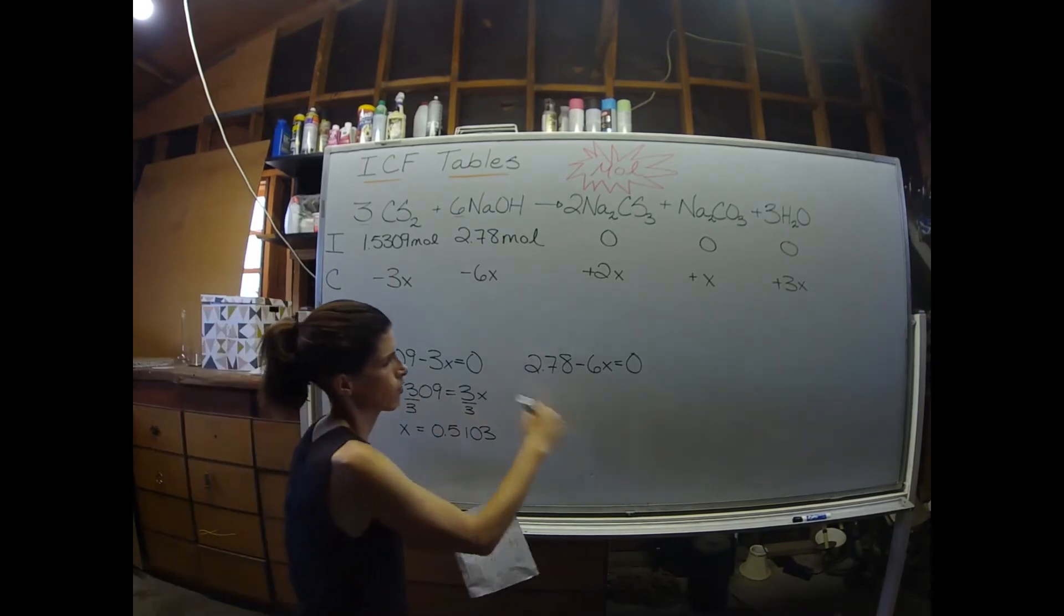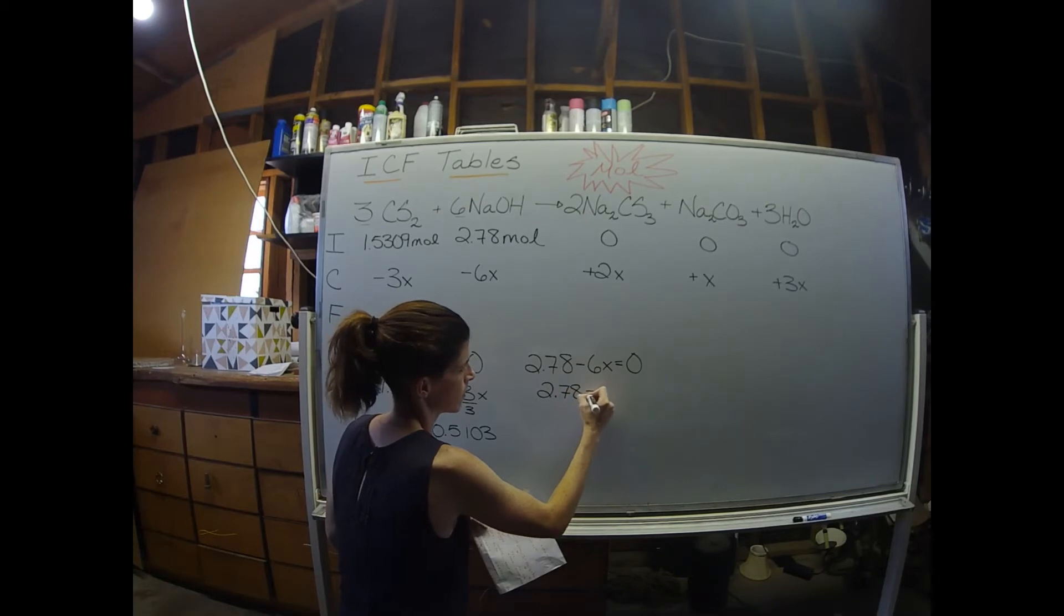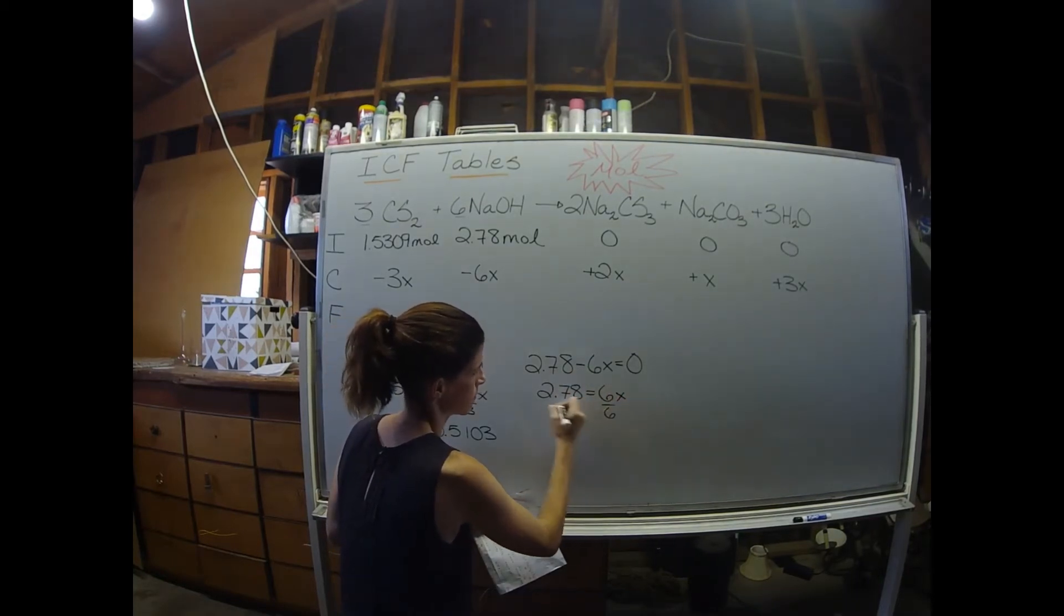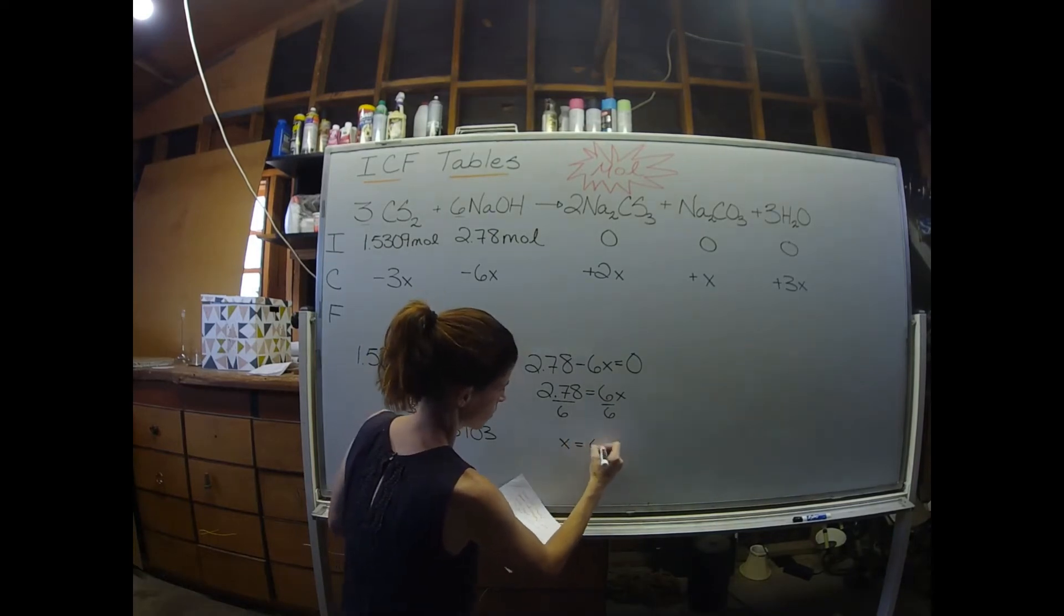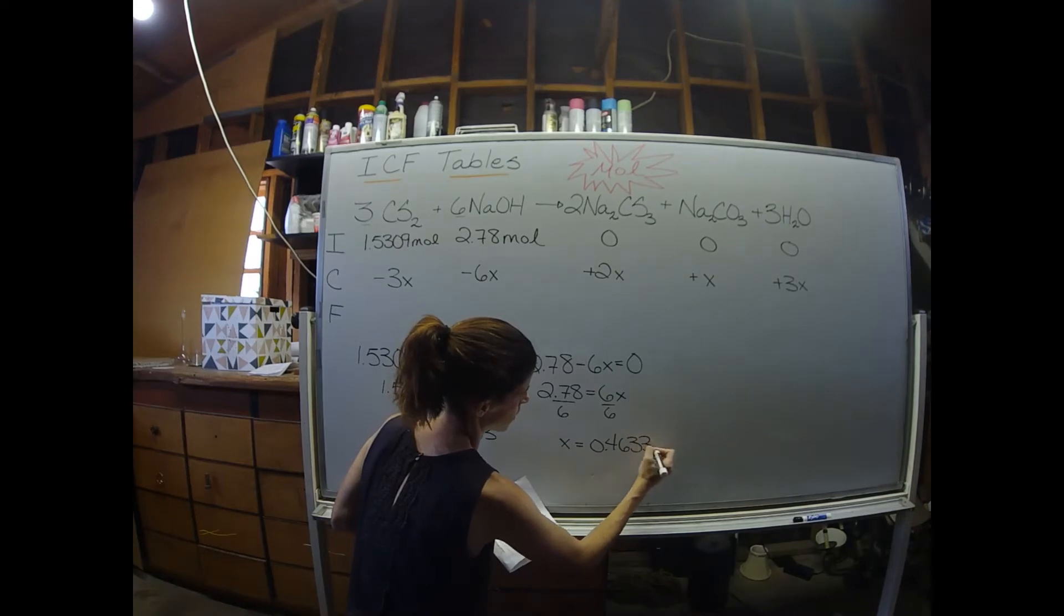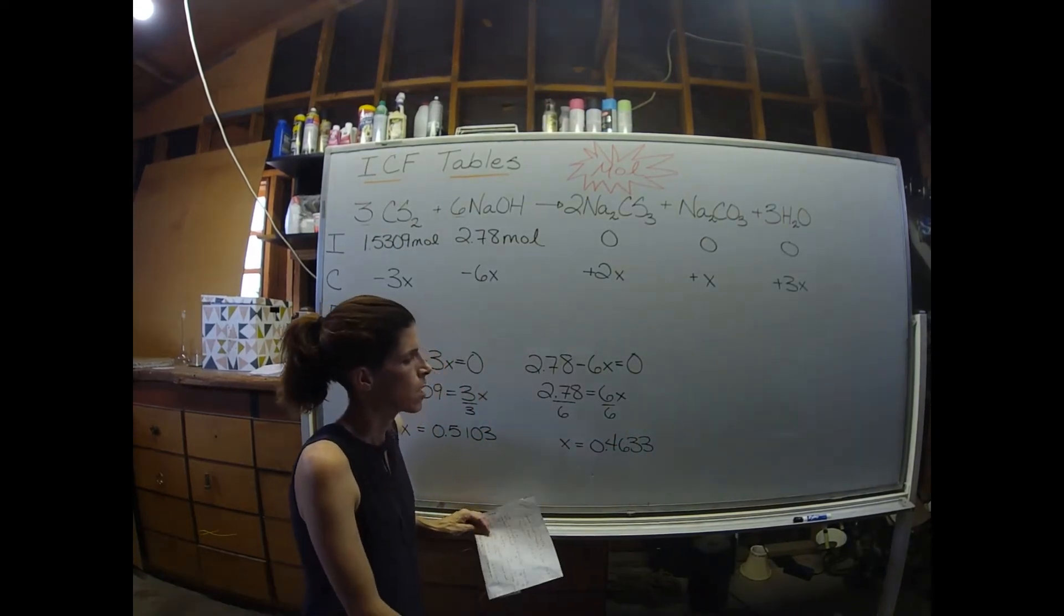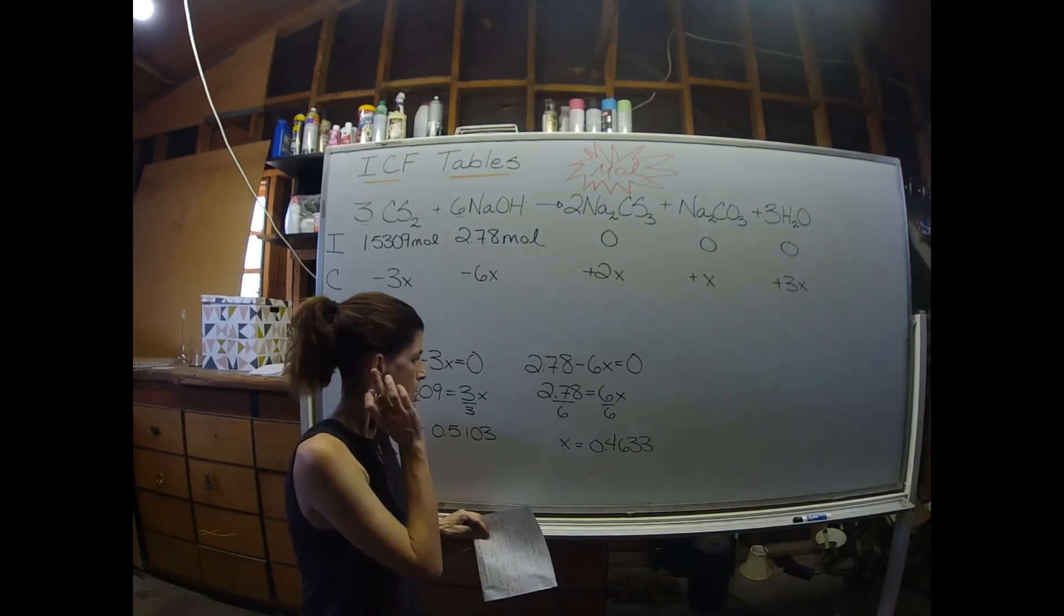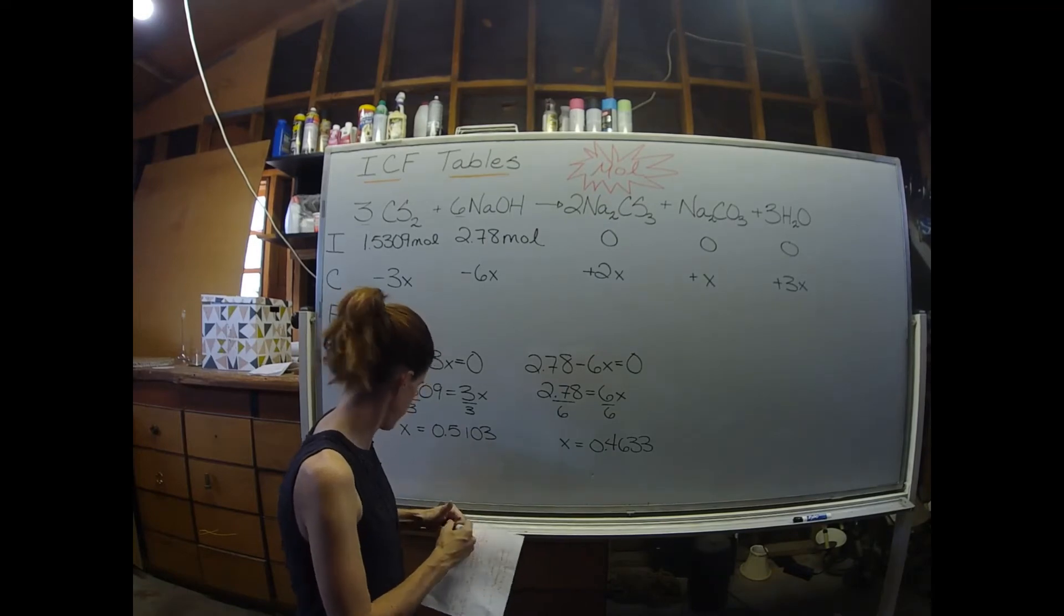And then same thing over here. I'm going to bring over the 6x and divide both sides by 6. And I get x equals 0.46333. You can keep some extra digits. The number that you want to go with is going to be your smallest x value.